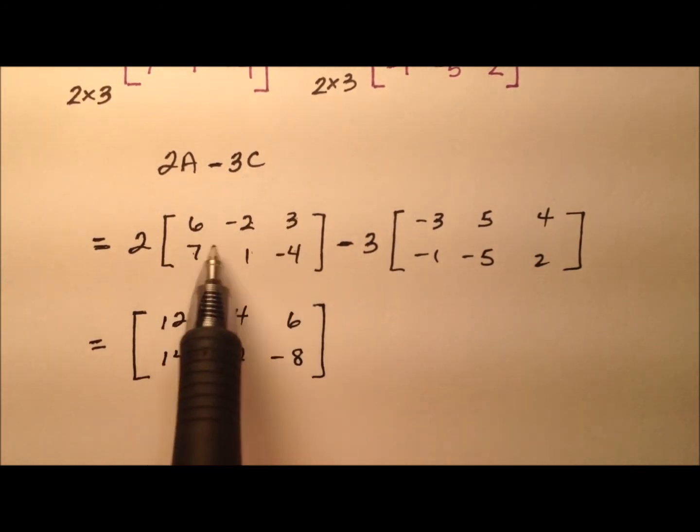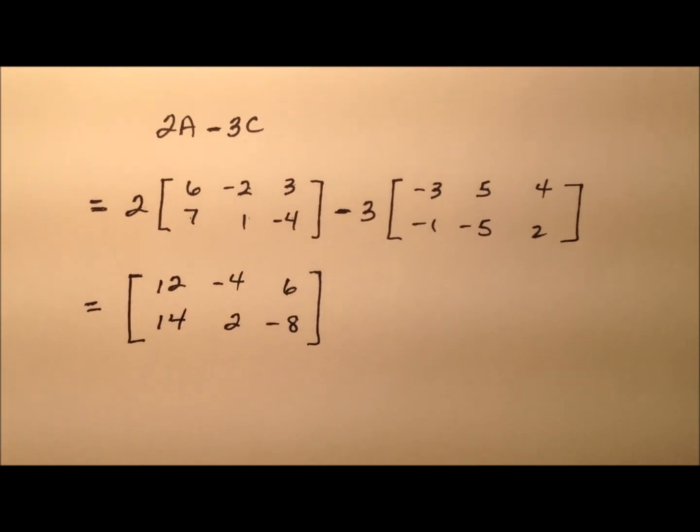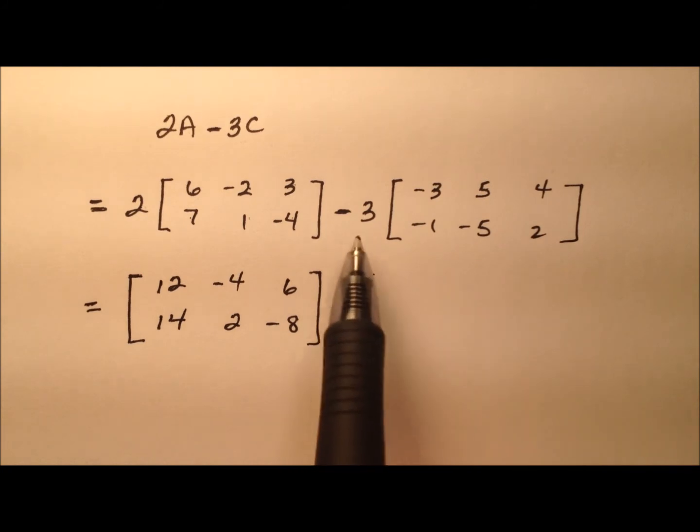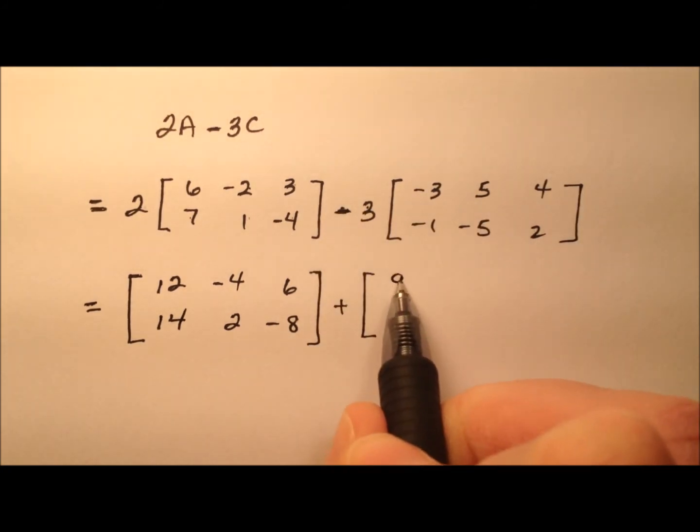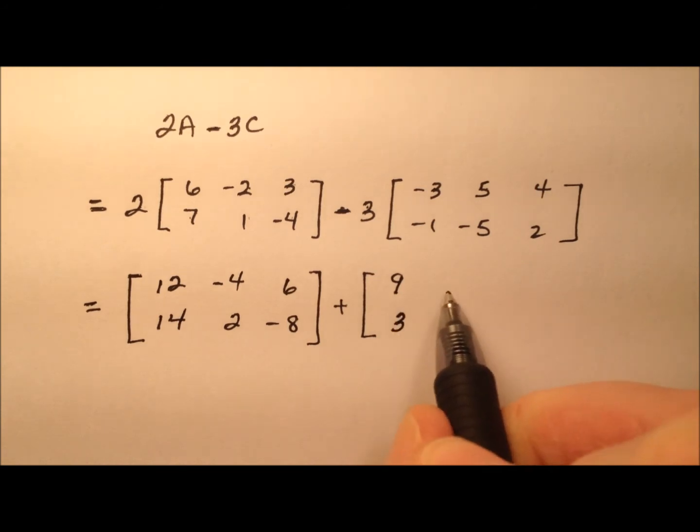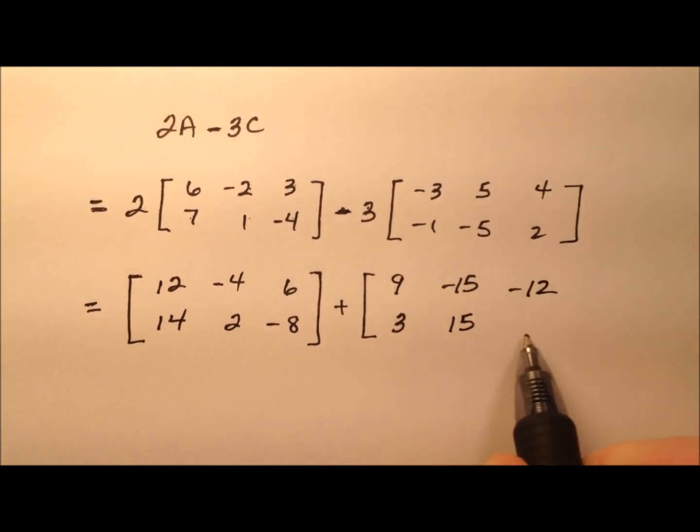And again, all we did was just take each entry and multiply it by 2, or just double it. So, now we're going to add. Let's multiply all these entries by negative 3, so it looks like we have 9, positive 3, negative 15, positive 15, negative 12, and negative 6.